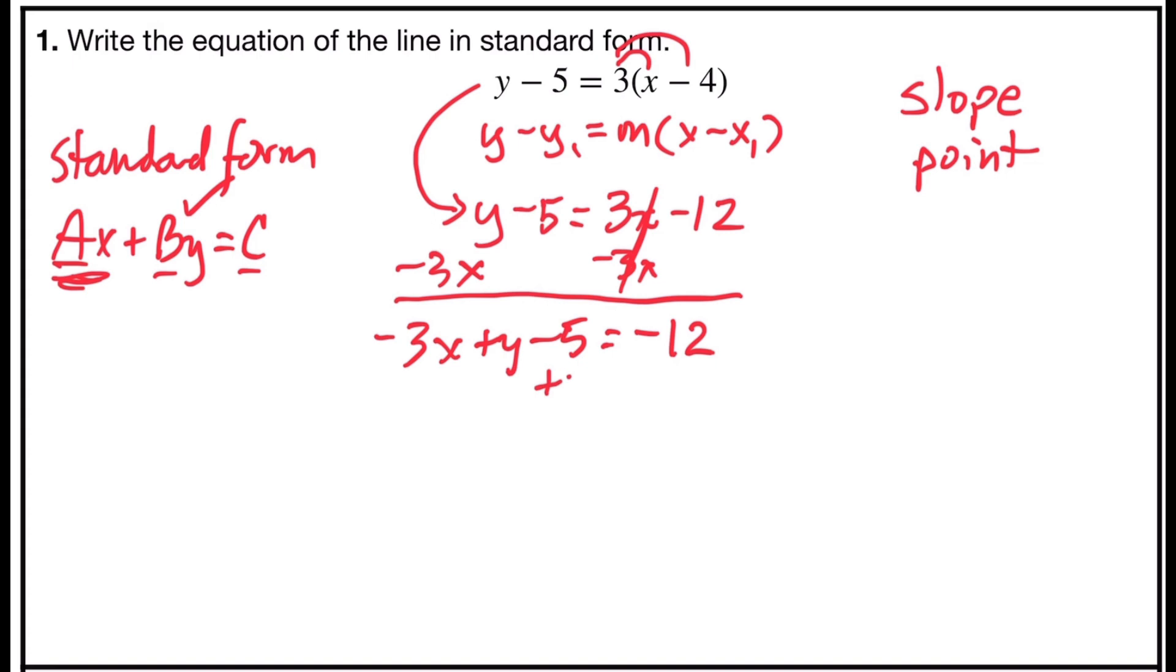Now I'm going to add 5 to both sides to put all the number constant terms on the right. Negative 5 plus 5 is 0, leaving me with negative 3x plus y equals negative 7. So I'm almost there.